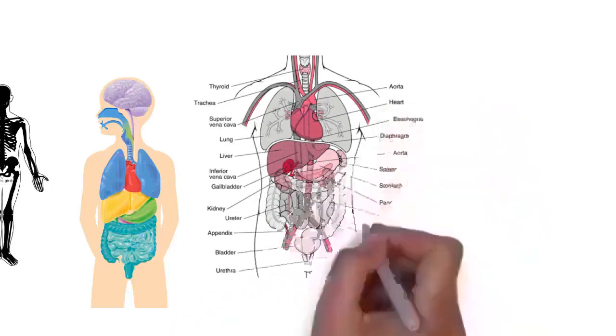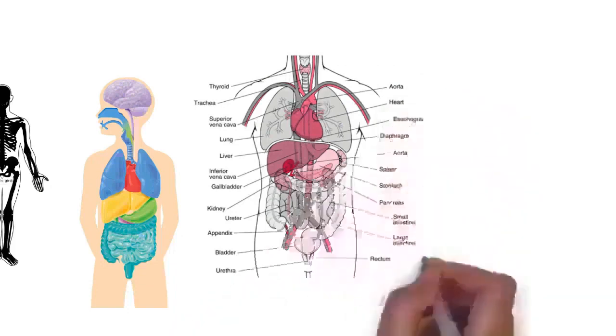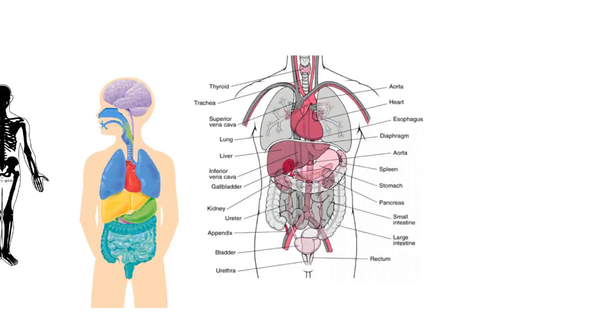Nerves connect the spinal cord and brain to the rest of the body. All major bones, muscles, and nerves in the body are named, with the exception of anatomical variations such as sesamoid bones and accessory muscles. Blood vessels carry blood throughout the body, which moves because of the beating of the heart.